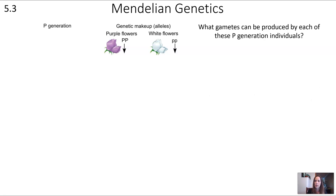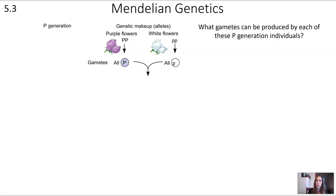Looking at this example where we have a purple flower with a genotype of PP and a white flower with a genotype of pp — what gametes can be produced by each of these individuals? Both of these are homozygous, so their alleles are the same. The PP individual can only make gametes with big P, and the pp individual can only make gametes with little p.